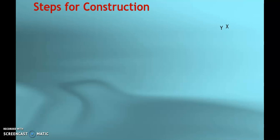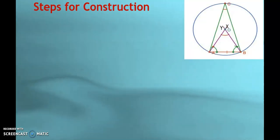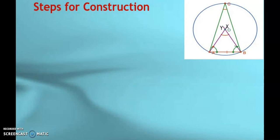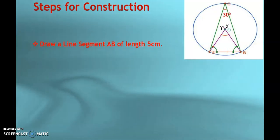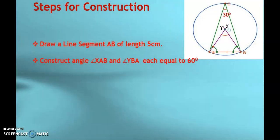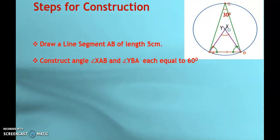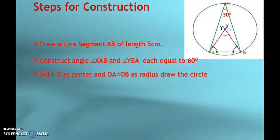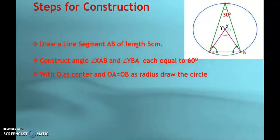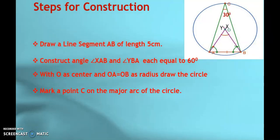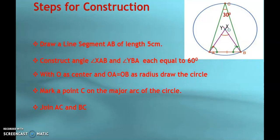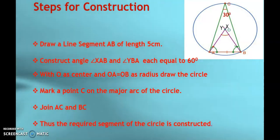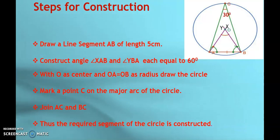Let us see the steps for construction of this segment of the circle. Draw line segment AB of length 5 centimeters. Then, construct angle XAB and angle YBA each equal to 60 degrees. Then, with O as center and OA equal to OB as radius, draw the circle. Mark a point C on the major arc of the circle. Join AC and BC. Thus, the required segment of the circle is constructed.